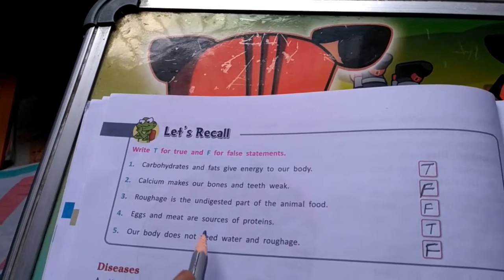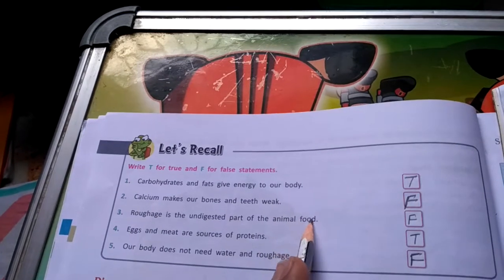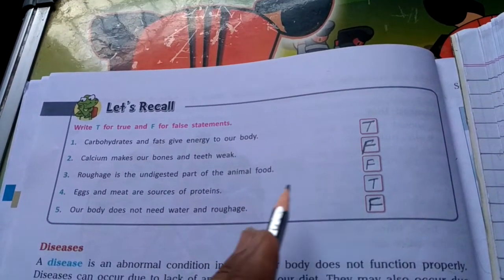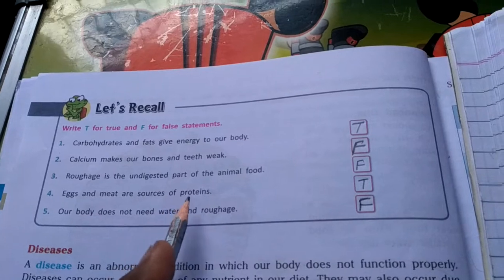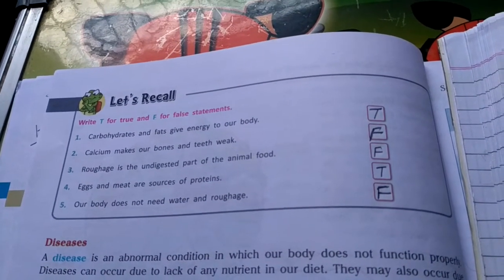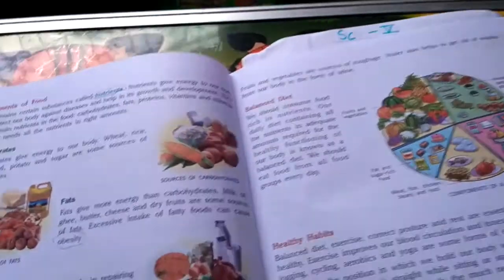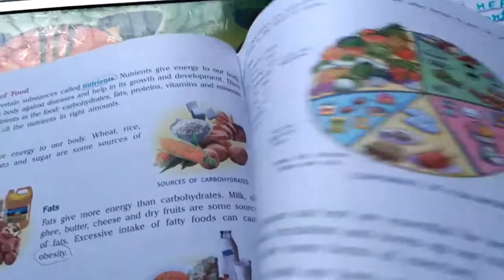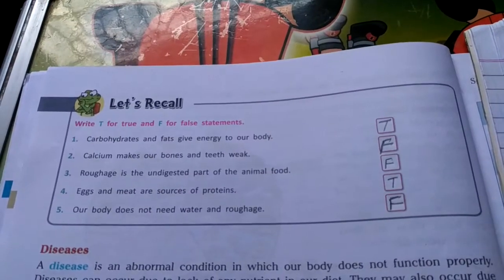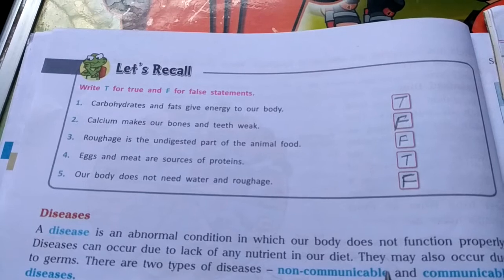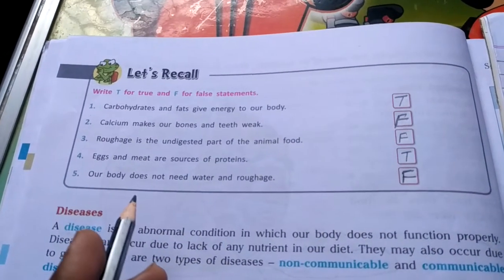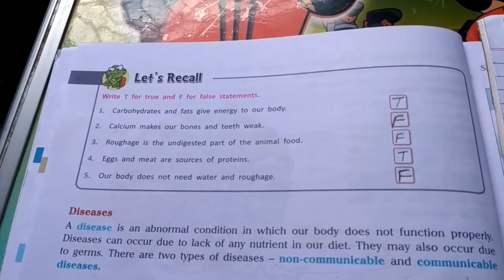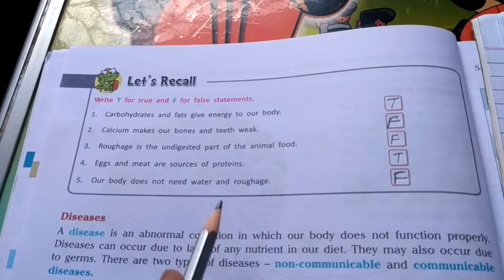Third — roughage is the undigested part of animal food — FALSE, it is the undigested part of plant food. Fourth — eggs and meat are sources of proteins — TRUE. Fifth — our body does not need water and roughage — FALSE, our body needs roughage for proper digestion and to get rid of waste, and water is also essential.